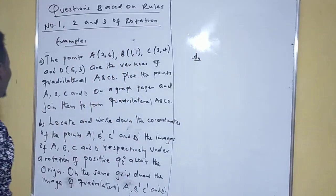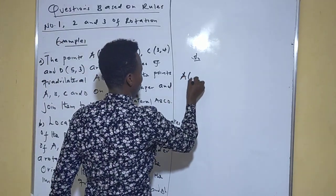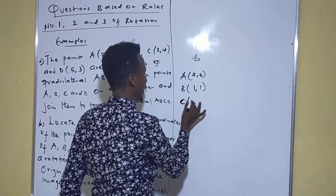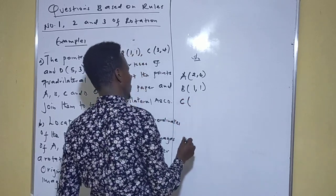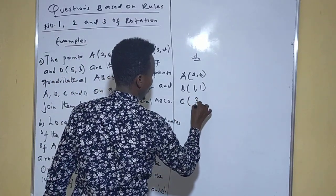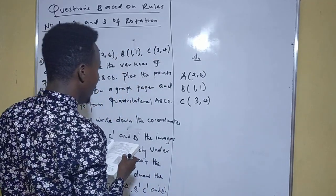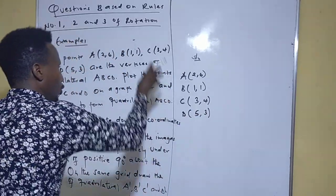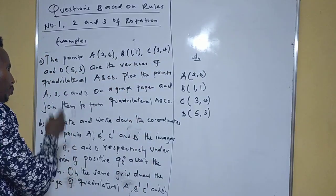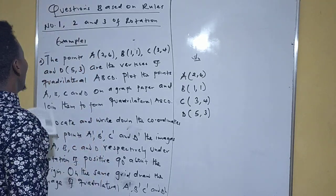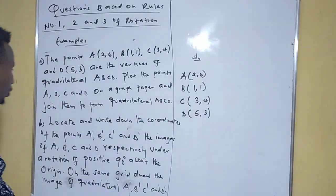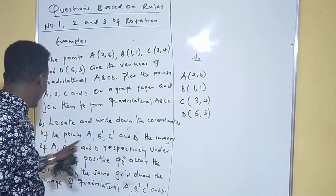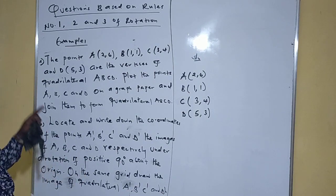Coming to the solution — it is very easy so far you know the rules. We have object points: A is (2, 6), B is (1, 1), C is (3, 4), and D is (5, 3). Plot these in the Cartesian plane. Then for question B — look and write down the coordinates of A prime, B prime, C prime, and D prime, the image of A, B, C, and D respectively, under a rotation of positive 90 degrees about the origin.